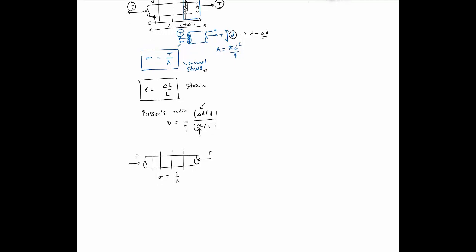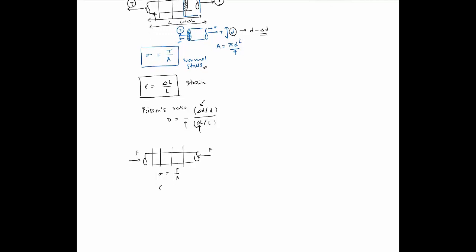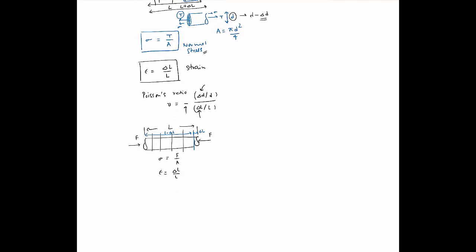At every cross section the force is F and the cross sectional area is A, so sigma is still F over A. The epsilon is still delta L over L. In this case delta L would be actually negative because if original length is L then after a while it might reduce to L minus delta L. So the differential change is delta L and epsilon is still delta L over L.